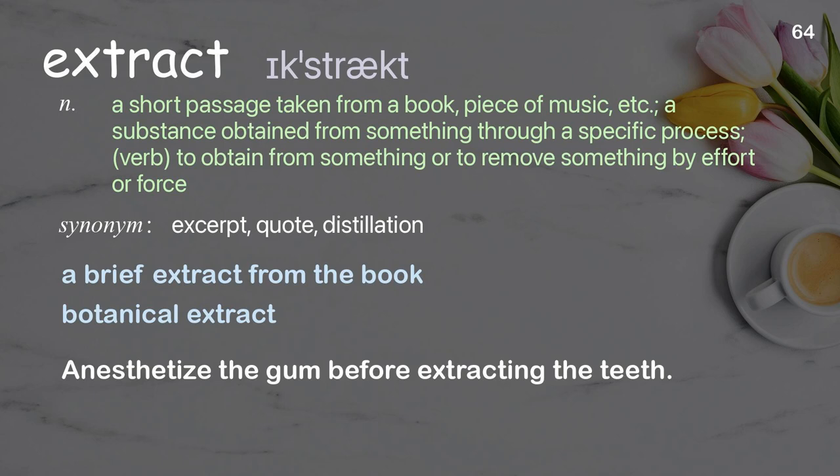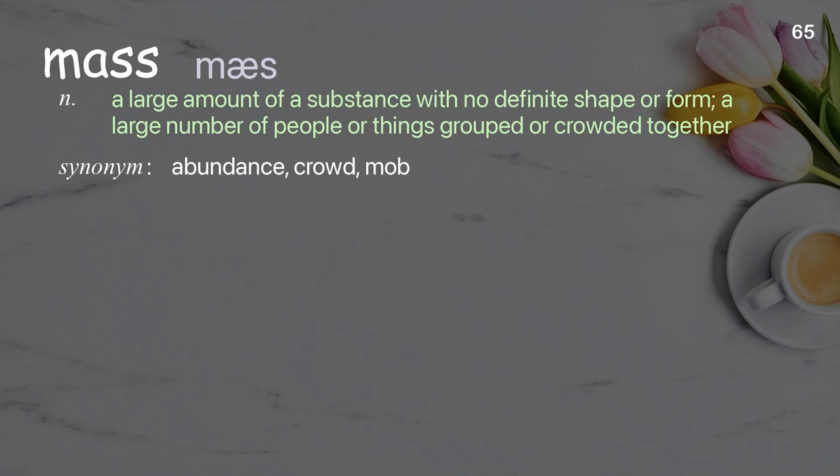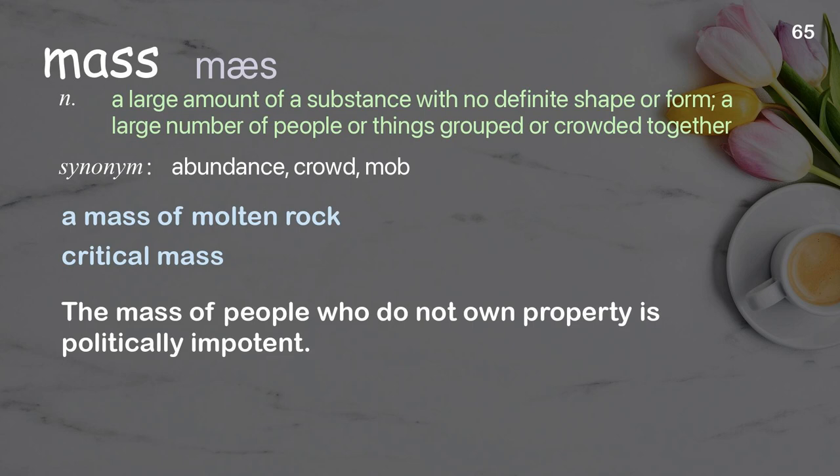Mass: a large amount of a substance with no definite shape or form; a large number of people or things grouped or crowded together. Examples: a mass of molten rock, critical mass. The mass of people who do not own property is politically impotent.